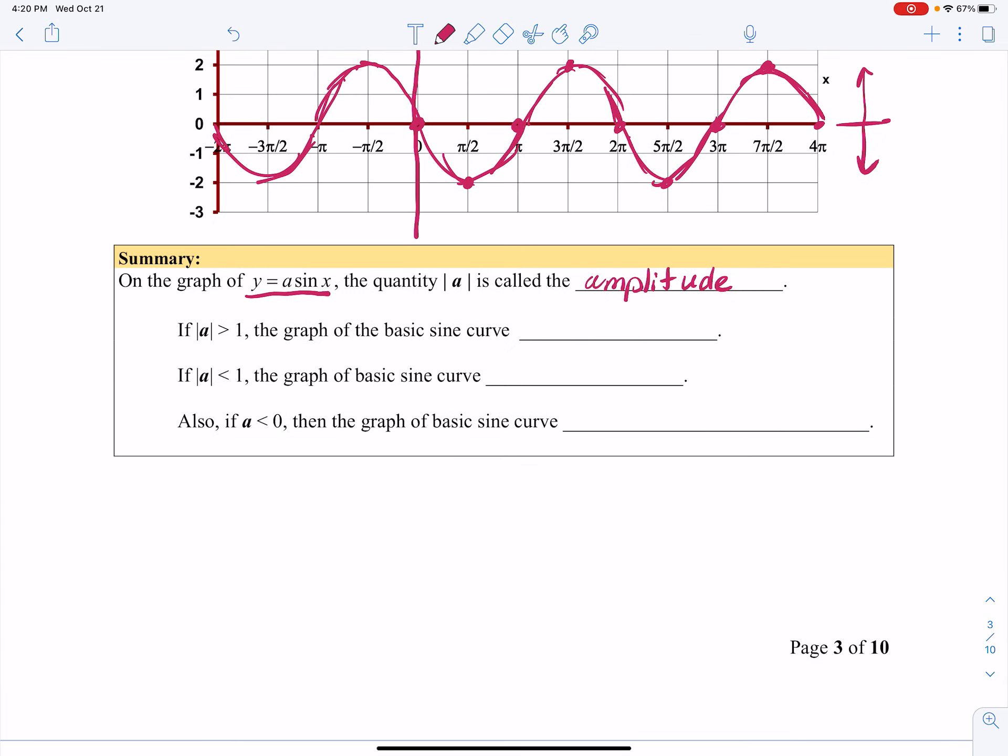So if the absolute value of a, if the amplitude is greater than 1, then the graph of the basic sine curve stretches. And we'll call it stretches vertically because that's what happened, right? With 3 sine of x and negative 2 sine of x, the graph stretched.